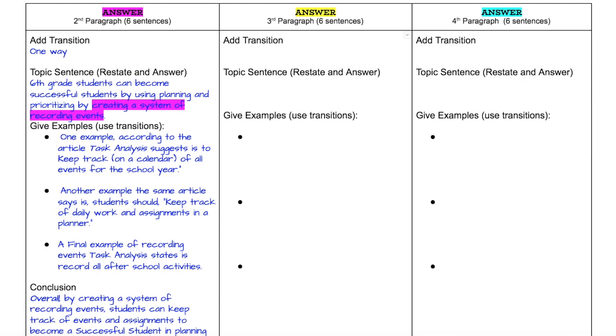Then I go on to my second bullet point. Now I have another transition, and I use the word another. So I said another example, the same article says students should keep track of daily work and assignments in a planner. So again, I've introduced the article, I've introduced the citation by saying the article says.